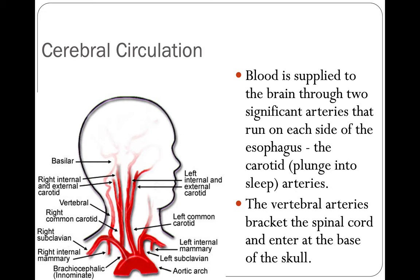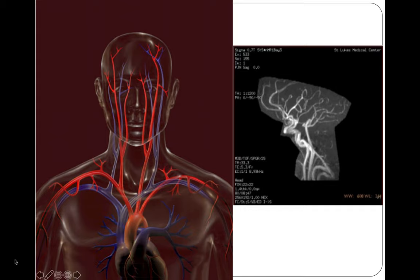Blood is supplied to the brain through two significant arteries — the carotid arteries — that run on each side of the esophagus. Carotid means plunging to sleep because if you hold the carotid artery, the person will pass out. The vertebral arteries bracket the spinal cord and enter at the base of the skull. So you have four major arteries going into your brain. If one of these is severed, the individual will lose blood very rapidly and potentially bleed out and die. At the base of the brain, the carotid and basilar arteries join to form a structure called the circle of Willis, providing a backup in case blood flow is impinged on one of the two major arteries.